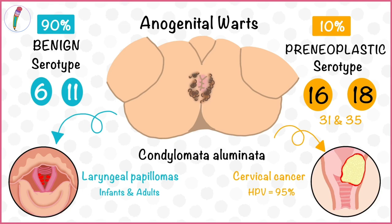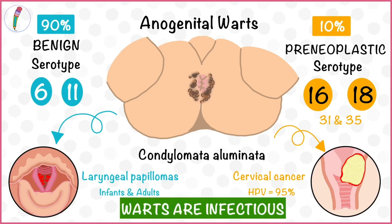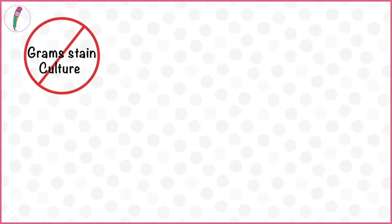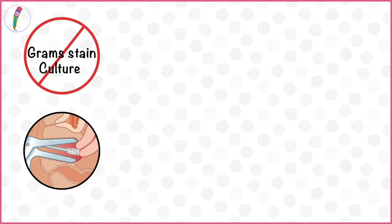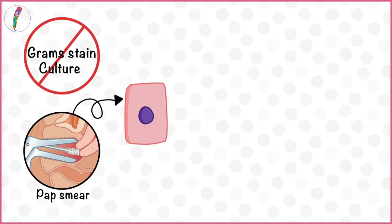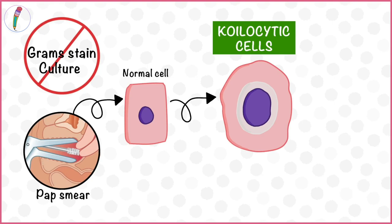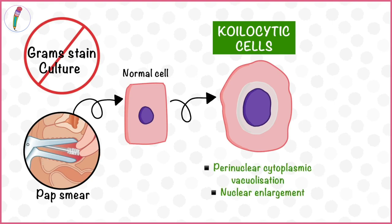It is important to remember that all warts are infectious, irrespective of their location. To diagnose HPV, we cannot use gram stain or culture because it is not a bacteria but a virus. In females, a pap smear is taken and the cells are stained and observed under the microscope. HPV causes normal cells to grow into koilocytic cells, which show nuclear enlargement and perinuclear cytoplasmic vacuolization.